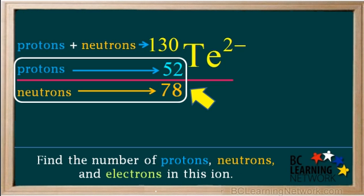At this point, double check to make sure protons and neutrons add up to the mass number, which they do. 52 plus 78 is equal to 130.